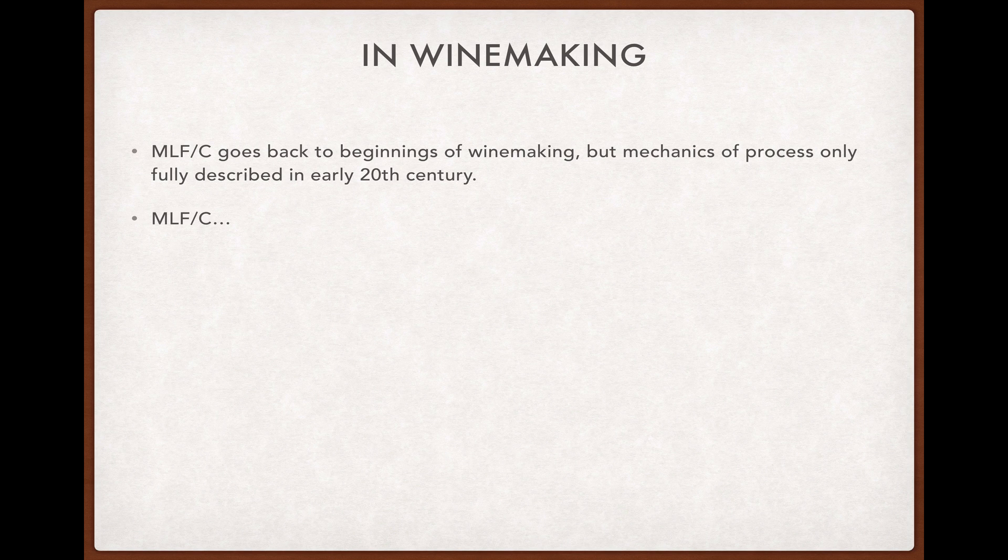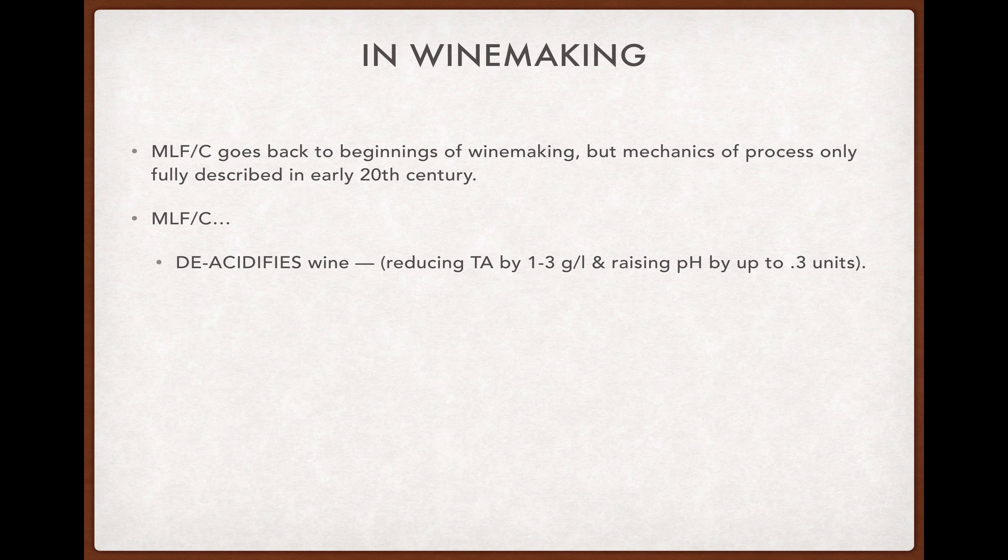Its role in winemaking is essentially threefold. First, it deacidifies wines that undergo it, lowering the total or titratable acidity of the wine by one to three grams per liter and raising the pH by up to 0.3 units — both of which, especially at the upper end of the range, represent a substantial drop in the acidity of the wine.